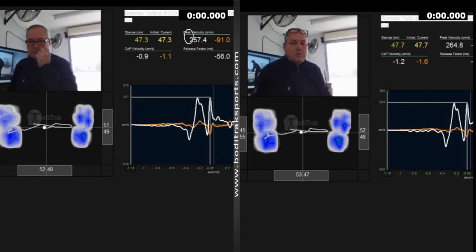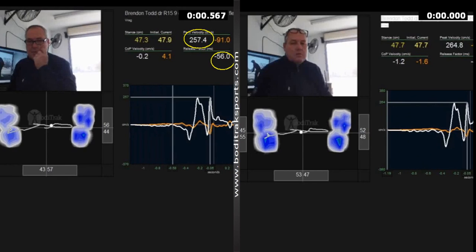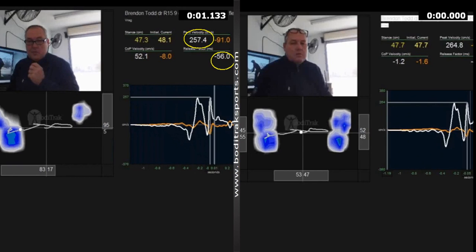Peak velocity, 575, 257.4. And the release factor, 56. Now the release factor is the time from when you make your largest lateral motion, and it's right in this case there, when those two lines converge. And we time that to impact. Just to refresh your memory, impact is right there. And that happens to be 56 milliseconds.